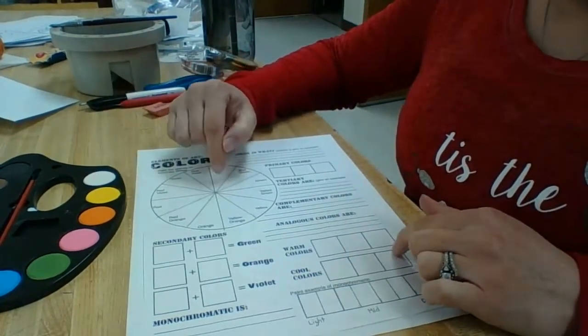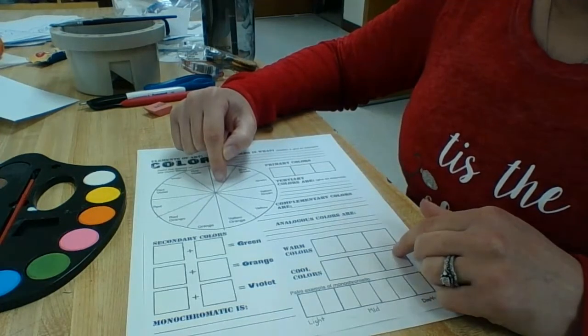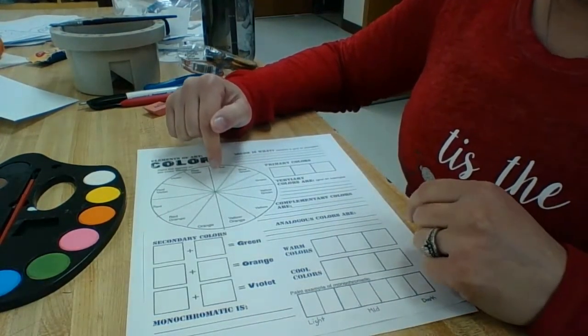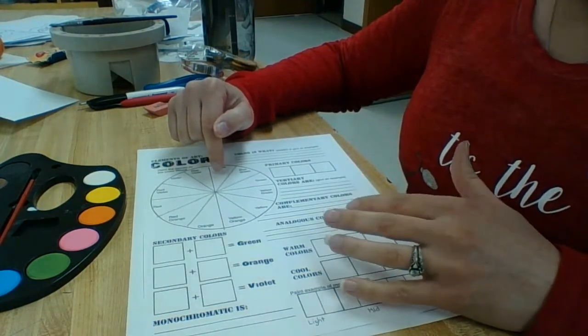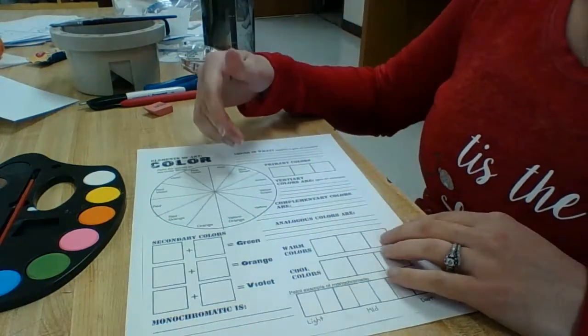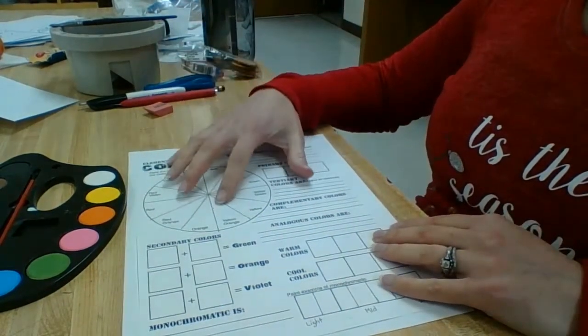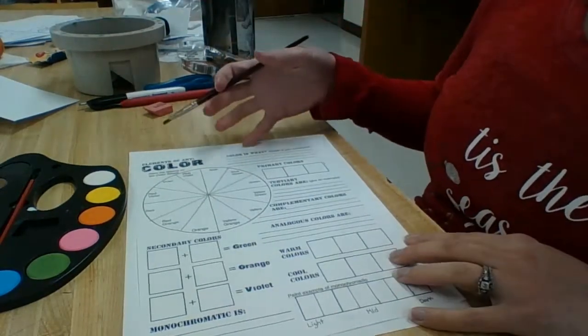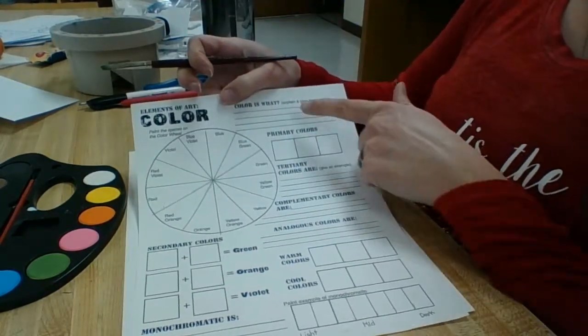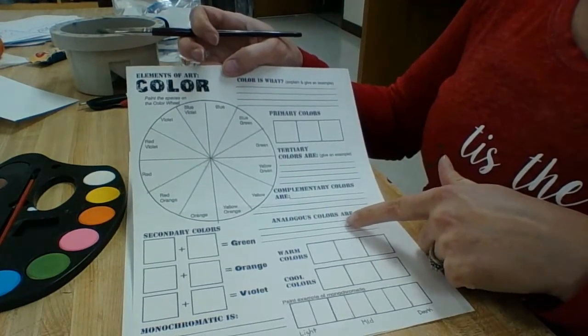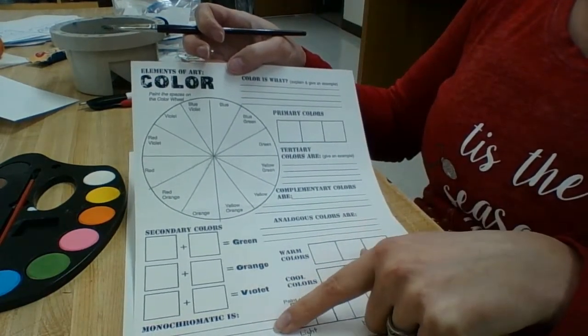If you did not get this sheet, I do have one on Schoology that you could print off or look at and then draw it out on a piece of notebook paper and paint it from there. You will need to do this, and you will notice that there are some questions that you will need to answer. Please fill those in with the correct answer.